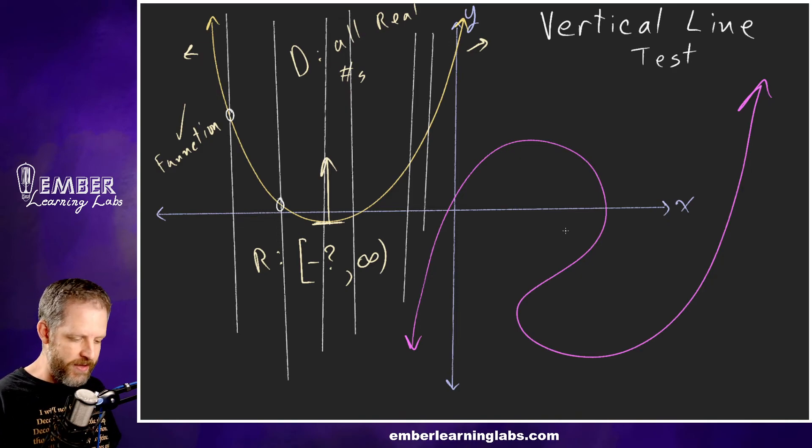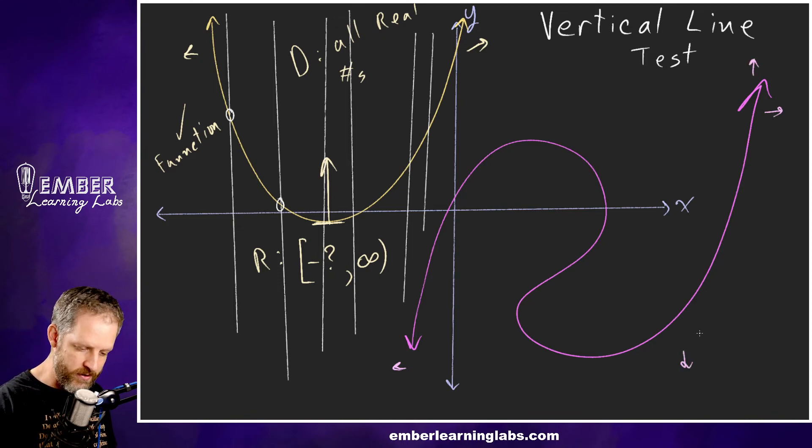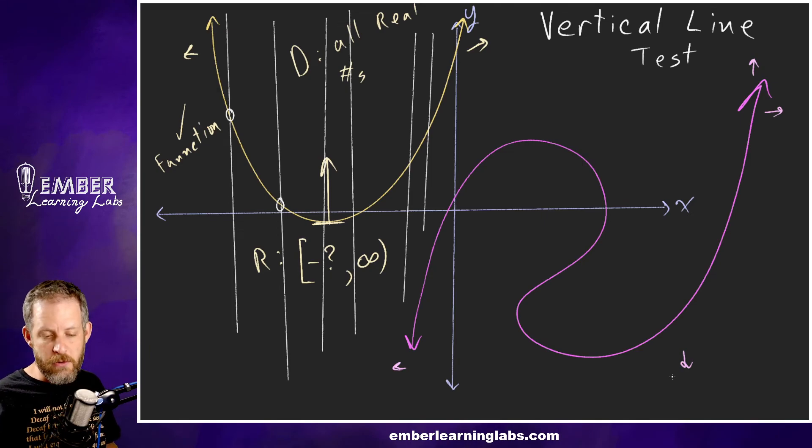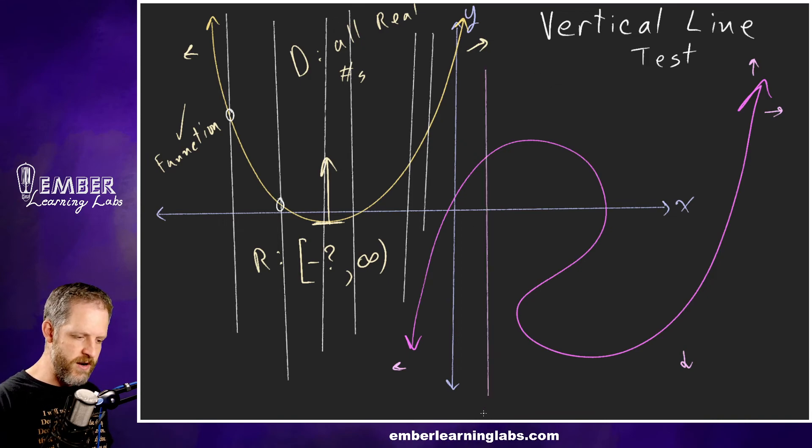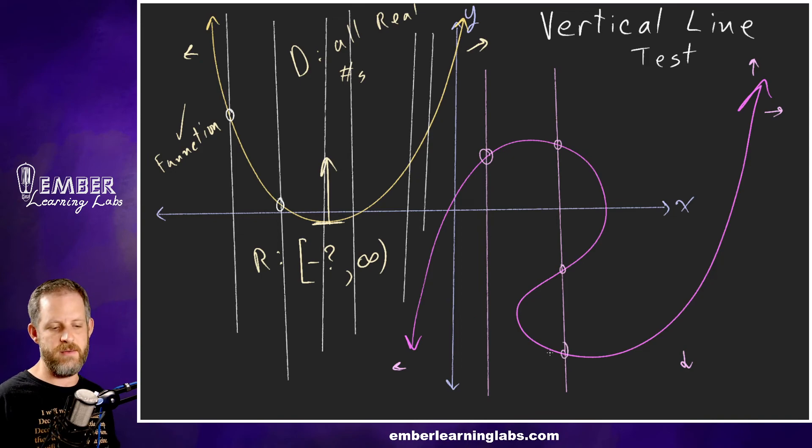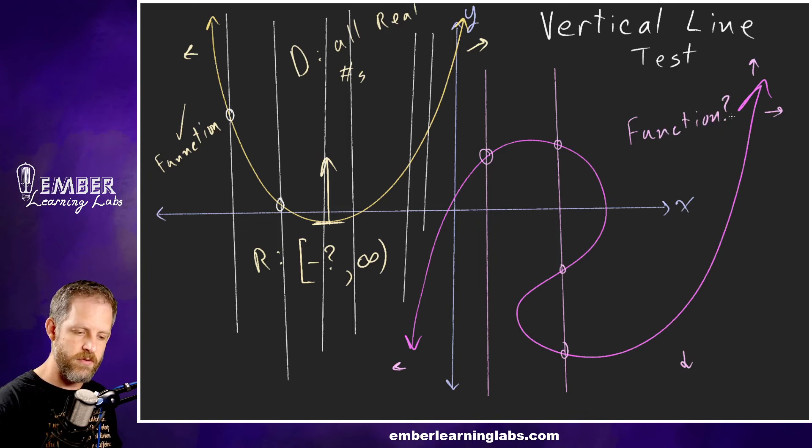For this pink one, the domain and range would both be all real numbers because this one is going all the way to negative infinity to the left, infinity to the right, infinity up and infinity down. What I wanted to illustrate with this pink one is if we do a vertical line test—I'll just draw a couple—like if I do one over here then it passes, just touches it once. But if I draw a vertical line here, it touches the graph one, two, three times. So if we're asking ourselves is this a function? It is not a function.